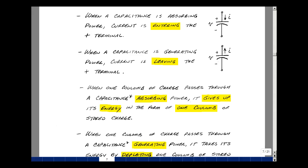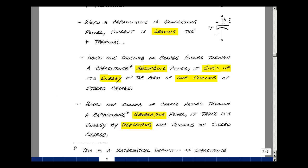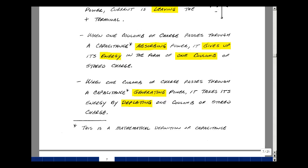What I want to do here is what I call a mathematical definition of capacitance. So when one coulomb of charge passes through a capacitance, absorbing power, I want to say that it gives up this energy in the form of one coulomb of stored charge. Then when one coulomb of charge passes through a capacitance that's generating power, its energy is depleted by one coulomb of the stored charge.